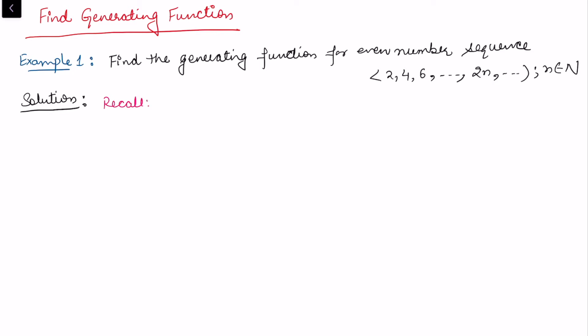Let's first consider the generating function for the sequence of all 1s: 1, 1, 1, 1, ... To find the generating function, we look at the first term, which is the constant term, so it is 1.